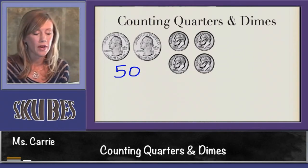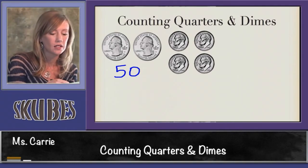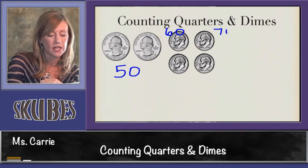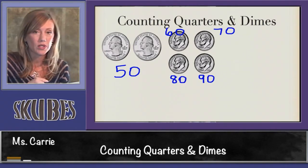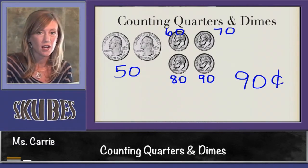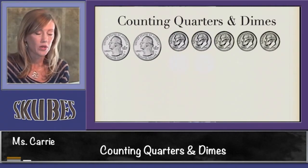We're done counting by quarters and we need to add 10 because now we're moving to dimes. So we'd say 50, then one dime would make 60, another dime would make 70, another dime would make 80, and another dime would make 90. This group of coins is worth 90 cents.